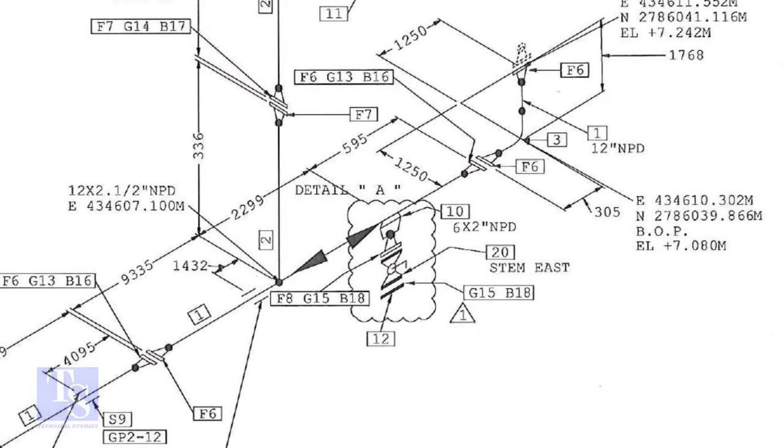Though we are going to fit up a weldolet, the procedure is the same for threadolet, sockolet, etc. In this drawing, the size of the weldolet is six inch into two inch.